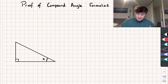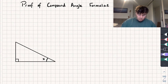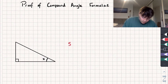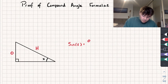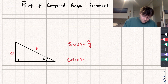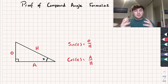To understand this proof, the only thing you need to understand is that, say we have a right angle triangle with an angle of x, well then sine of that angle, so sine of x, is going to be equal to our opposite side divided by our hypotenuse, so O over H, and cosine of that angle x is going to be equal to the adjacent divided by the hypotenuse. And if you understand that, that's enough to work through the proof.